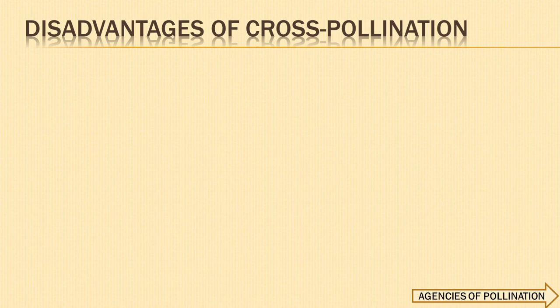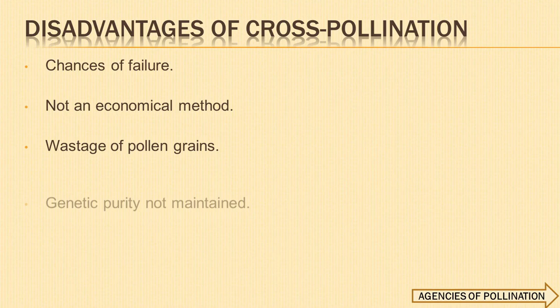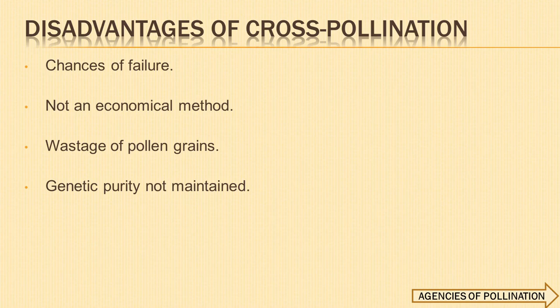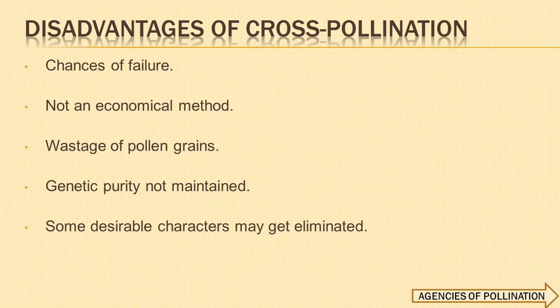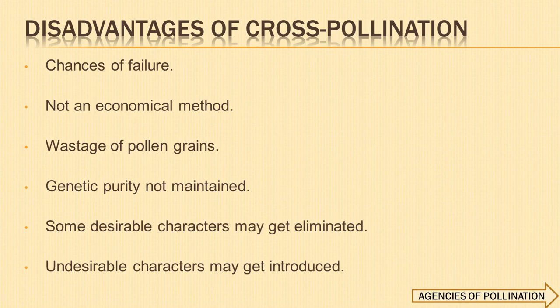Disadvantages of cross-pollination: As it depends on external carriers, the failure chances are more. It is not an economical method as the plant has to waste energy to attract its agents. Genetic purity is not maintained in the offspring. Some desirable characters may get eliminated when genetic recombination takes place. Simultaneously, some undesirable characters may get introduced.